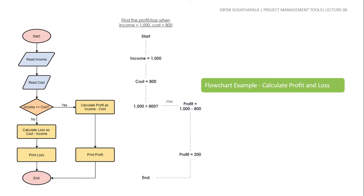Let's look at a flowchart example. We start and end with the terminal shape. We input income and cost values. We then make a decision based on the income and cost values.